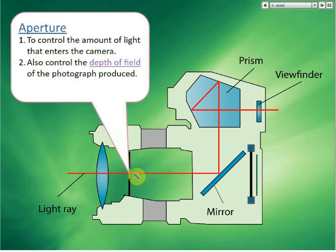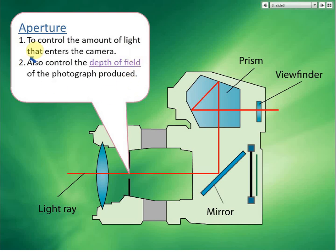The aperture controls the amount of light that enters the camera, and it also controls the depth of field of the photograph produced. Depth of field refers to how far, or how much of the image appears sharp in the picture. That is the function of the aperture.